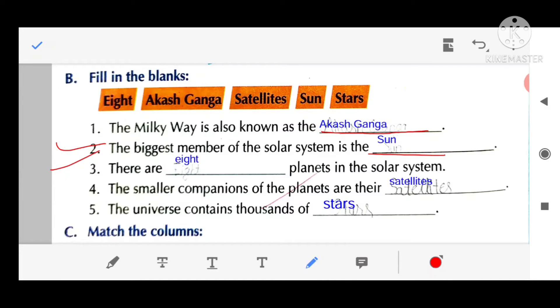Third, there are eight planets in the solar system. Fourth, the smaller companions of the planets are their satellites.